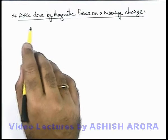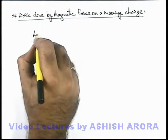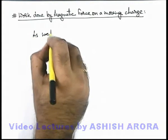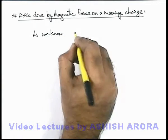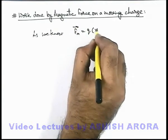Let us study the work done by magnetic force on a moving charge. As we know, the magnetic force on a moving charge particle is given by F = q(v × B).